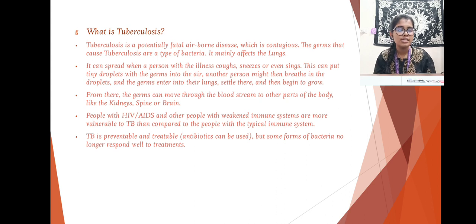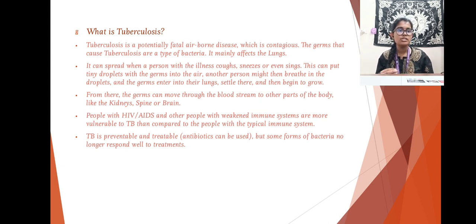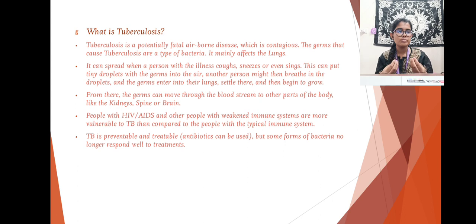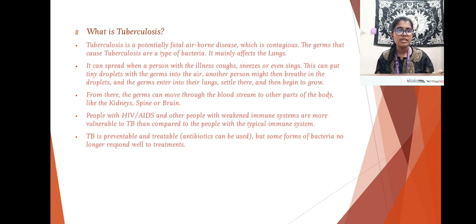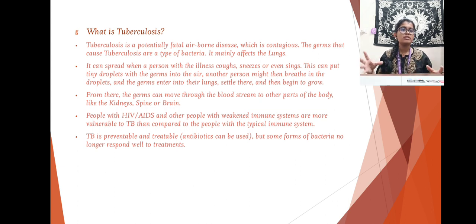The germs that cause tuberculosis are a type of bacteria and it mainly affects the lungs. Once the tiny droplets with the germs get into the air, they spread to people, affect their lungs, and from there the germs move through the bloodstream to other parts of the body like kidneys, spine, and the brain — that is how it affects the entire physical health of a human being.